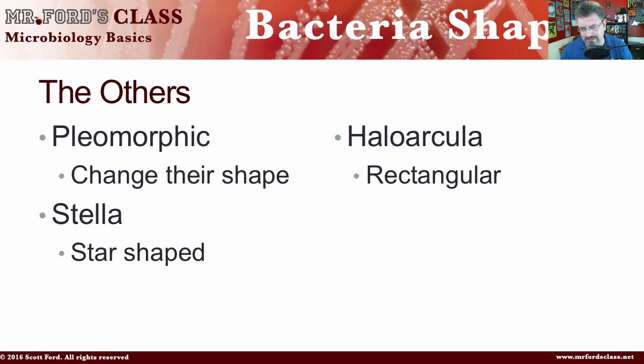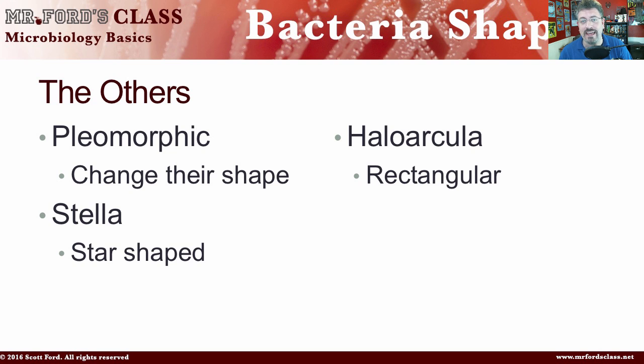And then of course we have some other shapes thrown in there. We have our big three, and then we have the pleomorphic, which means it changes its shape — it morphs into different shapes. We also have the stella, which is star-shaped. And yes, that's actually how you pronounce it — stella!